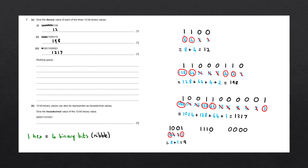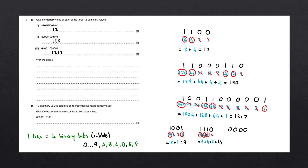For the second nibble, we apply the same method, writing down the bit positions in denary. Circle 8, circle 4, circle 2, and cancel 1. Adding these gives us 14. Now 14 is not directly a hexadecimal digit as written. The digits after 9 in hexadecimal are A, B, C, D, E, and F, equivalent to the denary numbers 10, 11, 12, 13, 14, and 15. So 14 is equivalent to E.